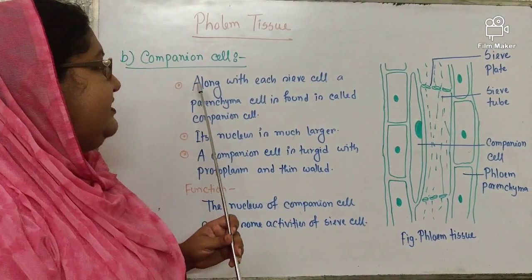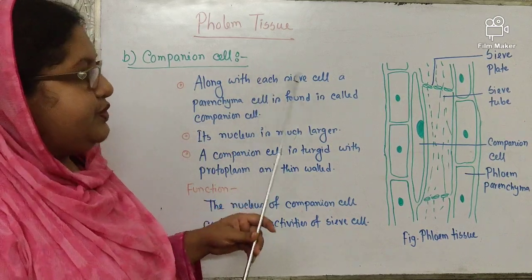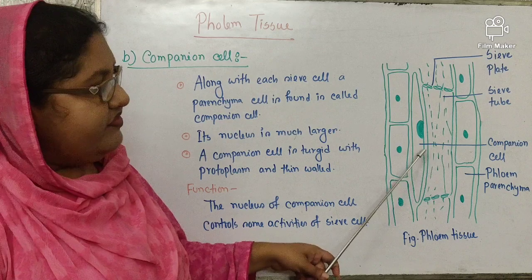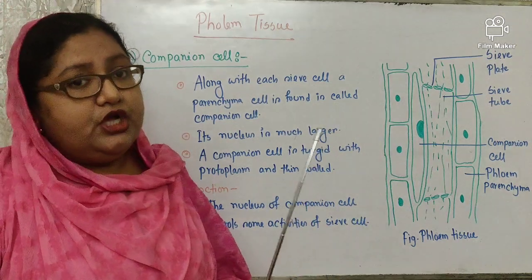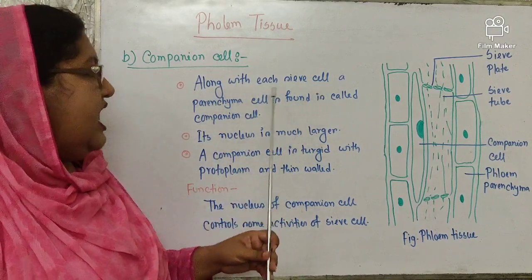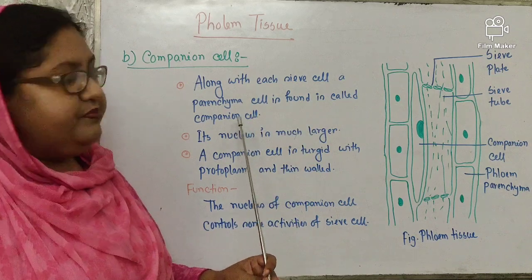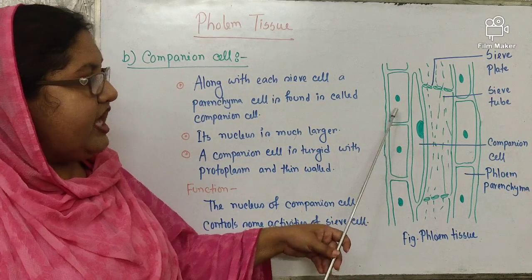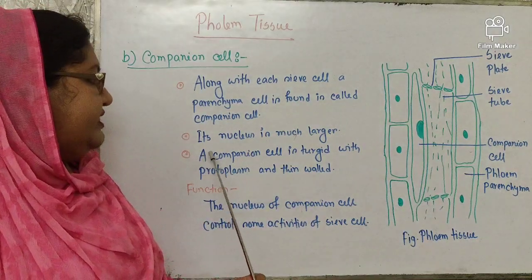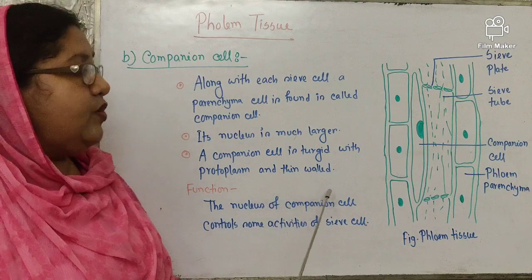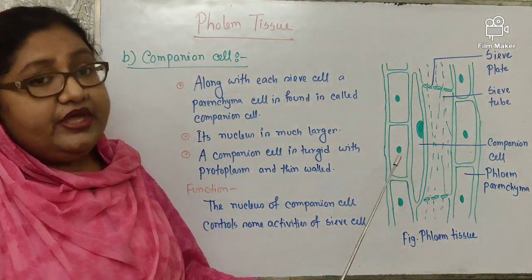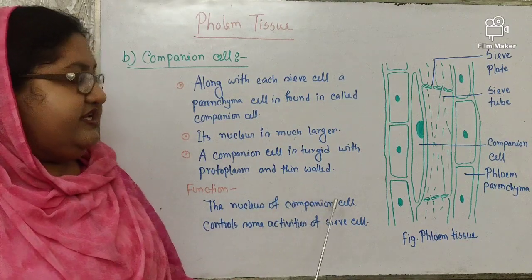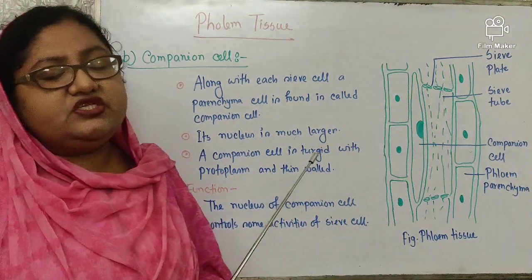Now, the characteristics of companion cell. A parenchyma cell found alongside each sieve cell is called a companion cell. Its nucleus is much larger — the nucleus of the companion cell is larger than that of other parenchyma cells. The companion cell is filled with protoplasm and has a thin wall. It is assumed that the nucleus of the companion cell controls some activities of the sieve cell, since the sieve cell does not have a nucleus.